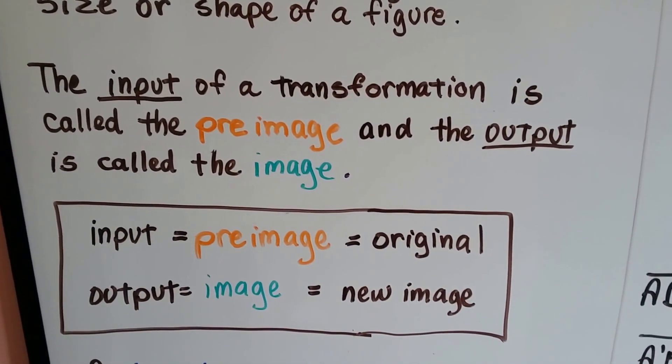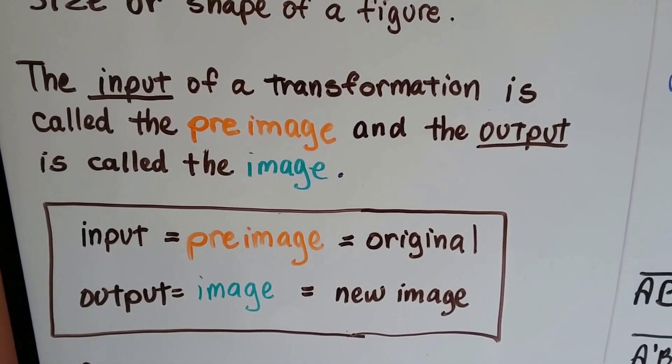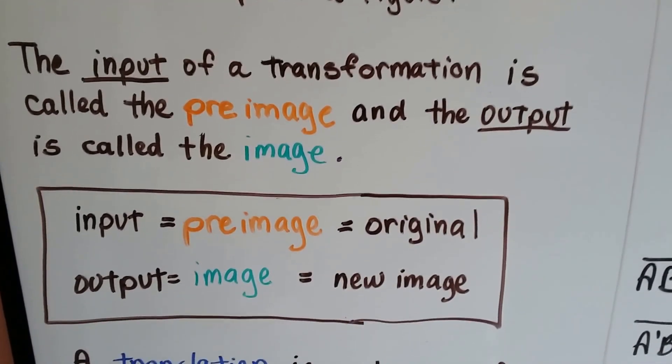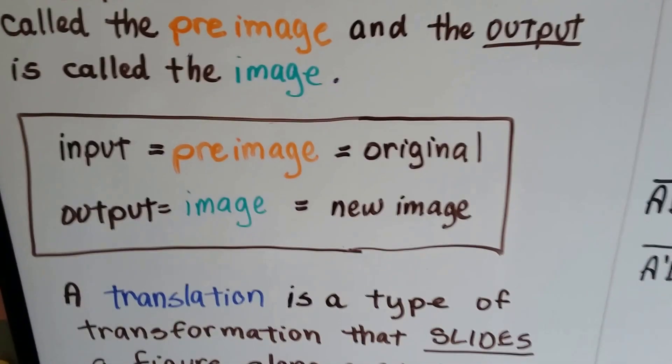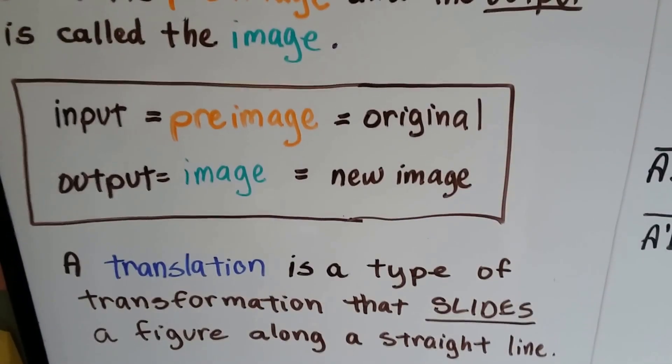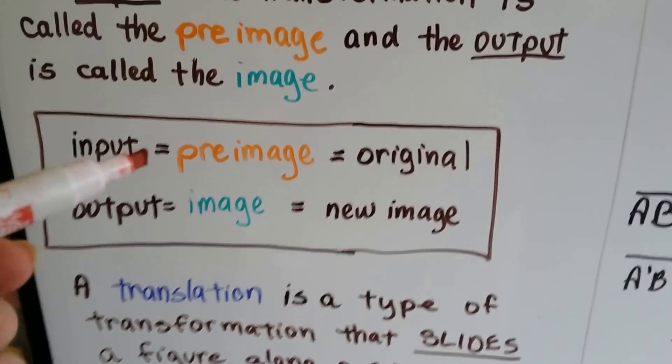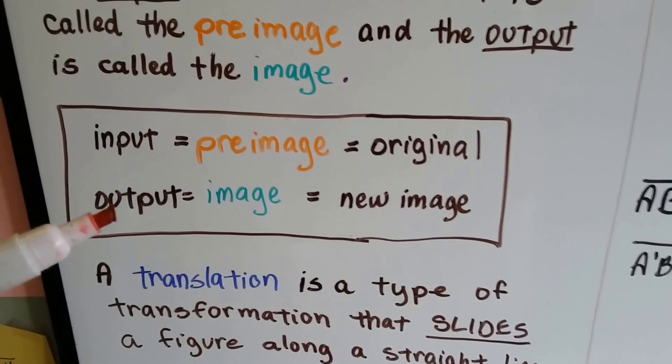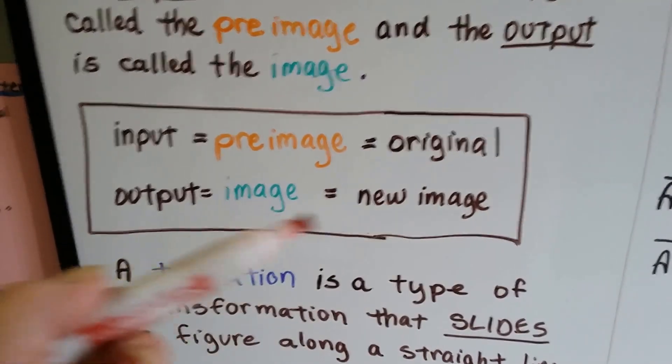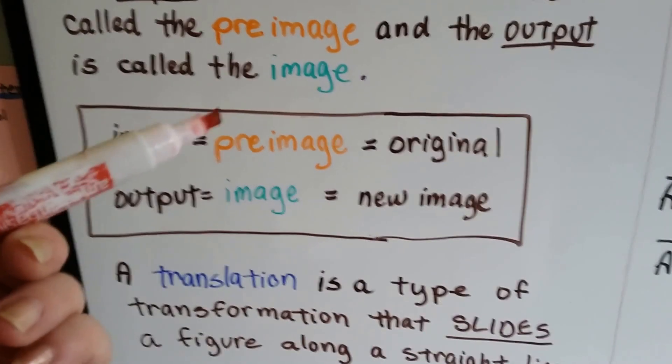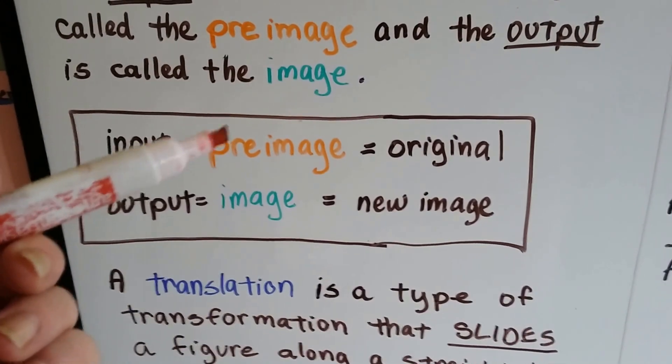The input of a transformation is called the pre-image, and the output is called the image. The input is the pre-image, the original figure or shape. The output is the image, the new image that came once this one went through the transformation.